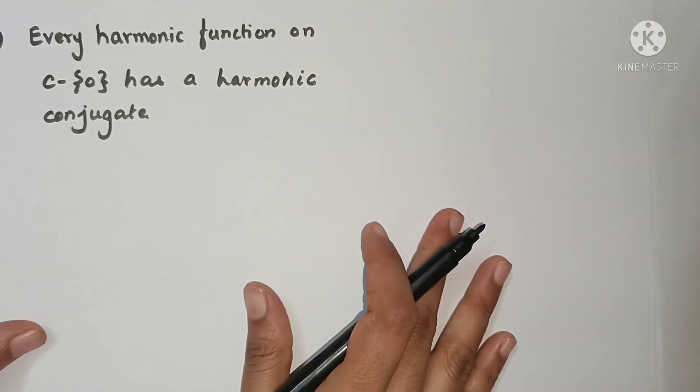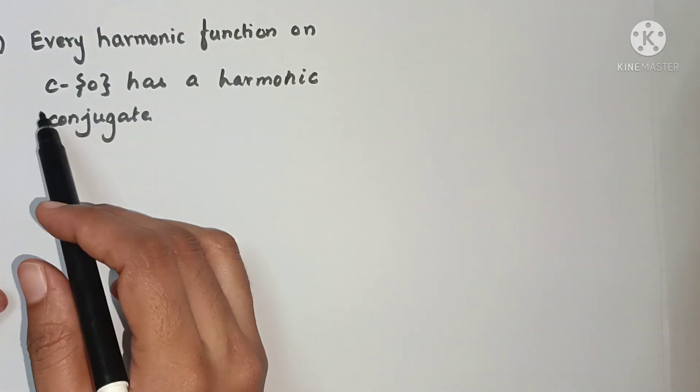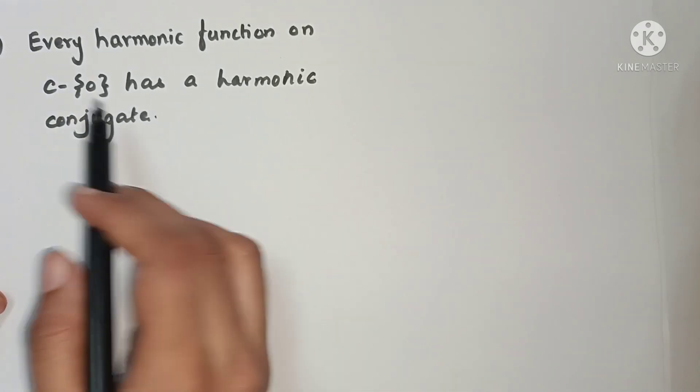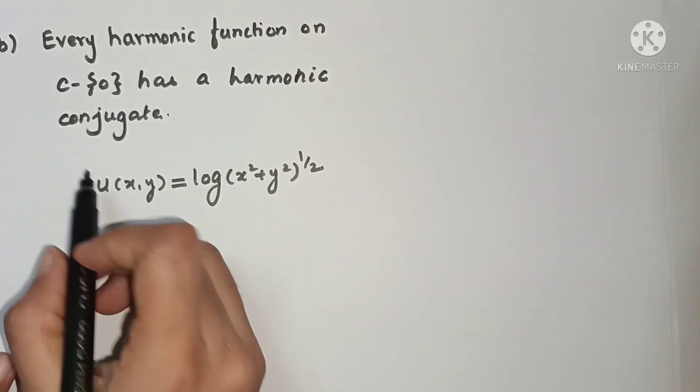Second statement B. Here we have the question: every harmonic function on C minus singleton 0 has a harmonic conjugate. So consider this example for this statement.